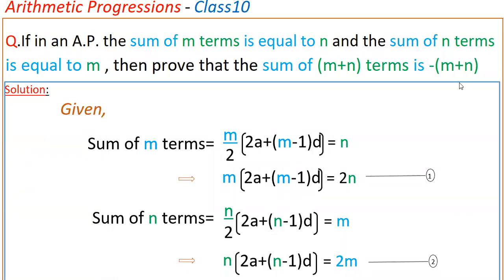Hello everyone. Today I am going to tell the solution of this problem: if in an AP the sum of m terms is equal to n, and the sum of n terms is equal to m, then prove that the sum of m plus n terms is minus of m plus n.